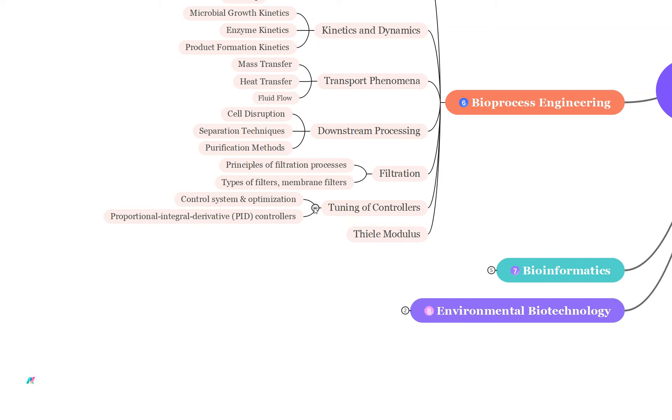Tuning of controllers: study the control systems and their optimization in bioprocess. Learn about the types of control loops such as the feedback, feed-forward, proportional integral derivative that is PID controllers and also their applications. And lastly don't forget the Thiele modulus. Explore the concept especially in the context of catalytic reactions and mass transfer. Understand how it relates to reaction rates and the reactor design.